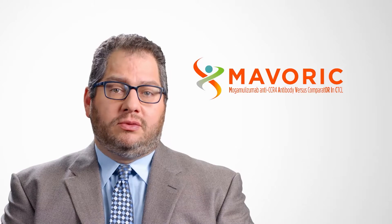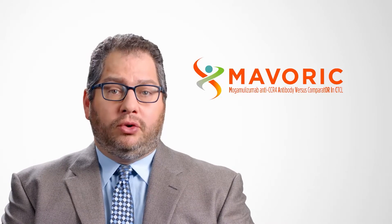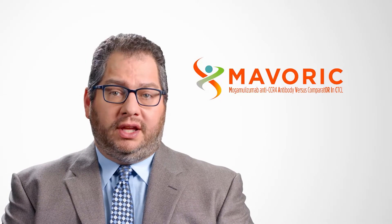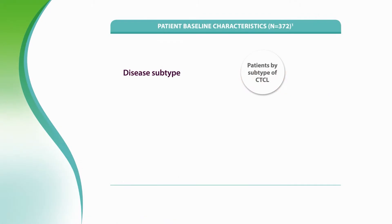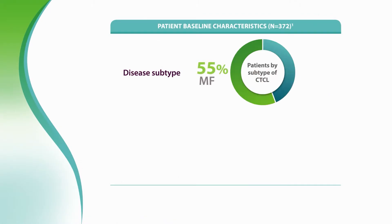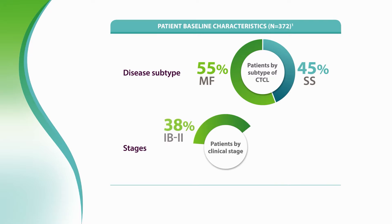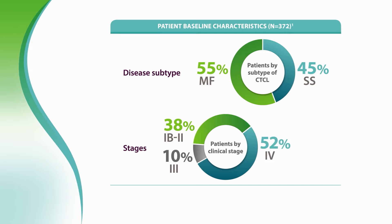MAVERICK was the pivotal phase three clinical trial that led to approval of mogamolizumab. MAVERICK included about equal numbers of MF and SS patients. Because the target, CCR4, is expressed at all stages of disease, MAVERICK included patients from as early as stage 1B through 4, with 38% of patients at stages 1B to 2 and 10% at stage 3 at the time of randomization.